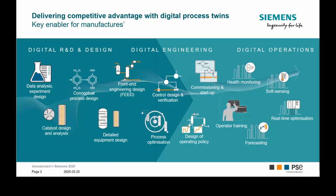If we consider a typical plant life cycle as shown on screen, we start with the design of the process on the left side. We combine experimental data from the lab with process models to find the best design. The design continues by creating a flow sheet and running design optimization to optimize process units like reactors, column towers, and the likes.